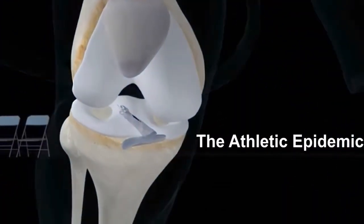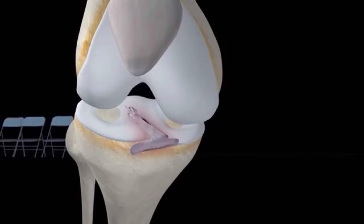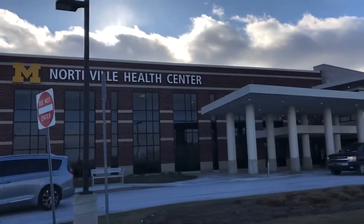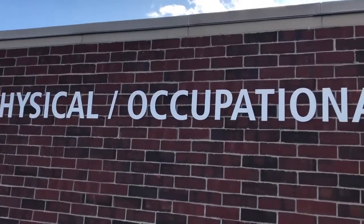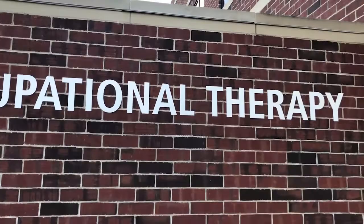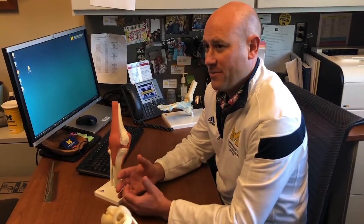Devastating ACL injuries are a prevalent epidemic that both amateur and professional athletes experience. The most common way an ACL tears is when an athlete plants their foot into the ground and there is a twisting and a valgus force to the knee, sometimes including impact. We call them either contact or non-contact injuries. A contact injury is if the person's foot is on the ground and they begin their motion of cutting and planting and turning, and then a blow comes into the knee.